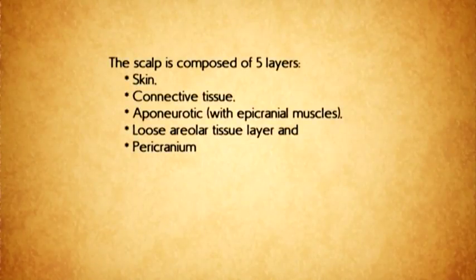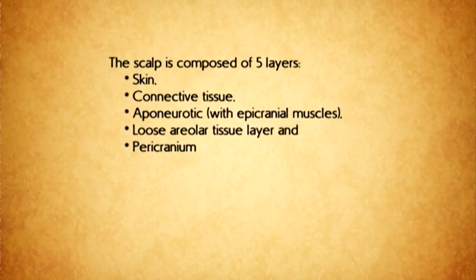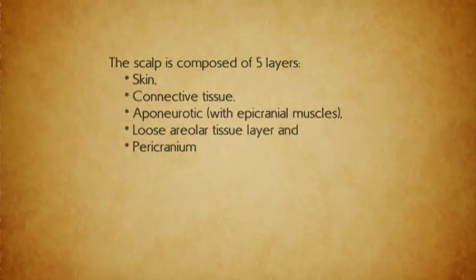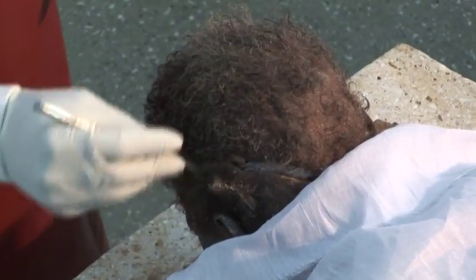The scalp is composed of five layers: the skin, connective tissue, aponeurotic layer with epicranial muscles, loose areolar tissue, and pericranium — forming the aponeurotic tissue of the cranium. That is the scalp.